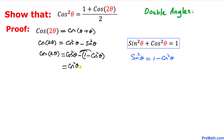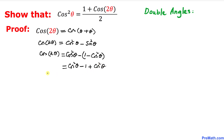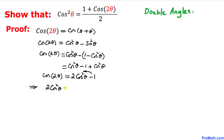Simplifying further on the left hand side we have cosine of 2 theta, and on the right hand side we combine like terms to get 2 cosine squared theta minus 1. Now let's move the negative one to the left hand side, giving us 2 cosine squared theta equals one plus cosine of 2 theta.